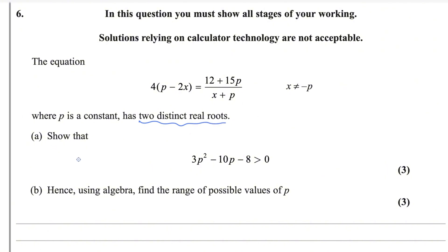We need to show that 3p squared minus 10p minus 80 is greater than 0. There are three rules about the discriminant — roots can be real, repeated, or imaginary. Let me tell you these three rules, as they will help you in other questions of this kind.